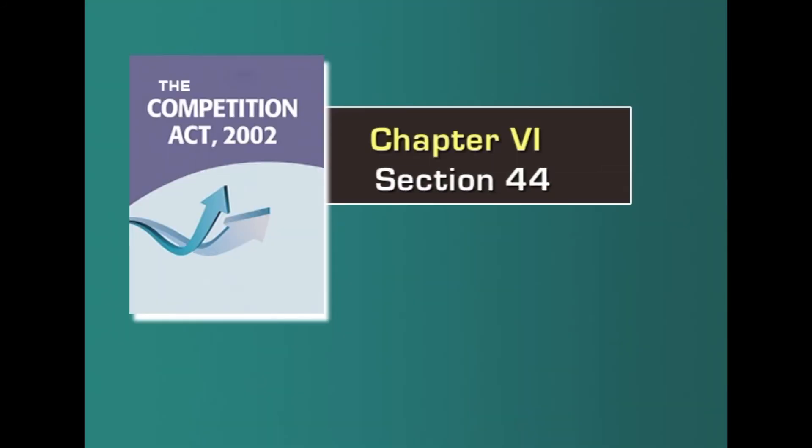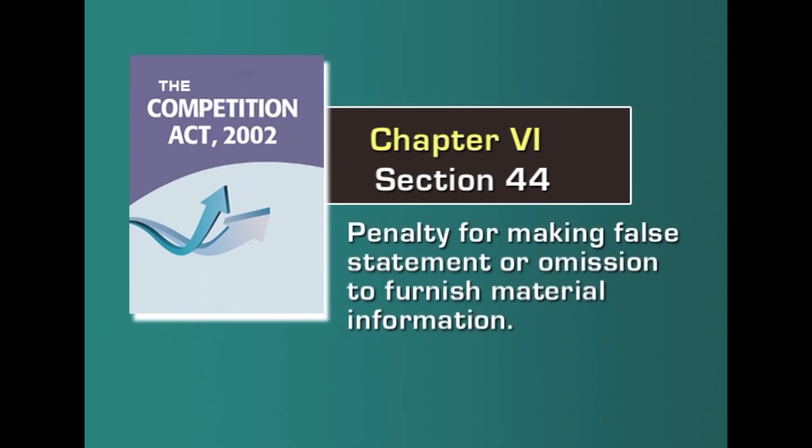The next section is section 44, which deals with any false statement made by a person called by the commission. The penalty for making a false statement or omission to furnish material information regarding a combination shall lead to a penalty which shall not be less than rupees 50 lakhs, or may extend to a maximum of rupees 1 crore. Section 44 basically deals with furnishing of false statements, omissions, or not furnishing information as called by the commission.